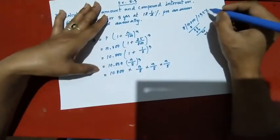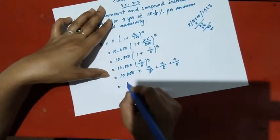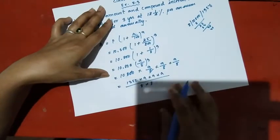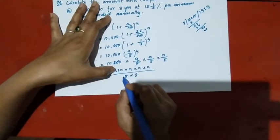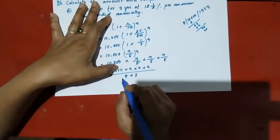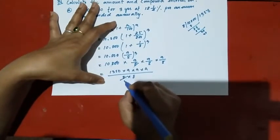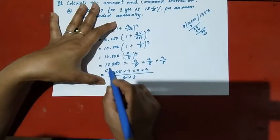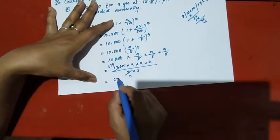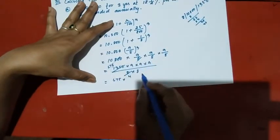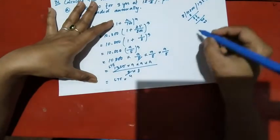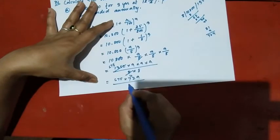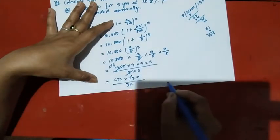So we compute 1,350 into 9 into 9, which gives us 9 by 8 into 8. Nine cubed is 729, and eight cubed is 512 — so we have 729 divided by 32 after simplification. Let's see: 729 over 32 gives us the next step.